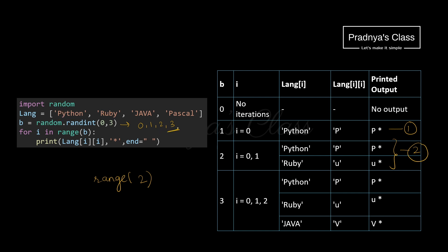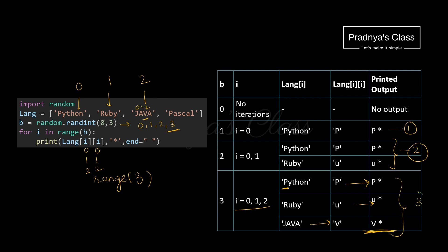Now only one value is pending, that is 3. Range of 3 means the value of I will be 0, 1, 2 — taking strings at the 0th, first, and second index. In the first pass, we take the 0th character, giving us 'P*'. In the second pass, we get 'U*'. In the third iteration, from the third string we take the character at index 2, which is 'V', giving us 'V*'. In this way, we got the third possible output.